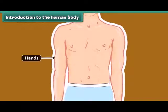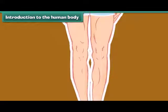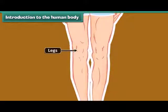Then we come to the hands, that help us to hold things. Another body part is the stomach. It is a kind of a bag where all the food that we eat gets stored for digestion. And finally, our legs that help us to stand straight, walk, run and play.